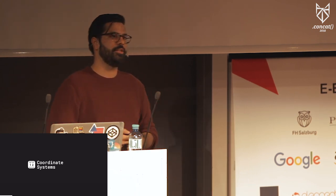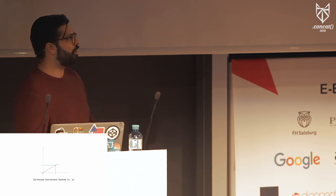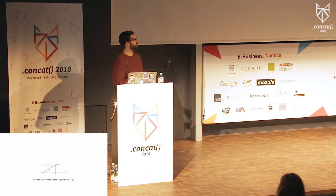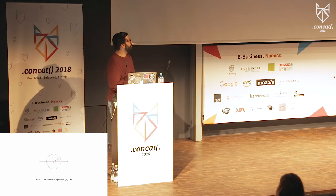Coordinate systems are a tool that you might be familiar with. They allow us to figure out the position of something in two-dimensional and three-dimensional space. The one you've probably used is the Cartesian coordinate system. This is used by CSS transforms, HTML canvas, WebGL, or just about any graphics tool out in the market. And the way this works is you locate the position of something in terms of X and Y. There are, however, other options available to us, and one of them is the polar coordinate system.